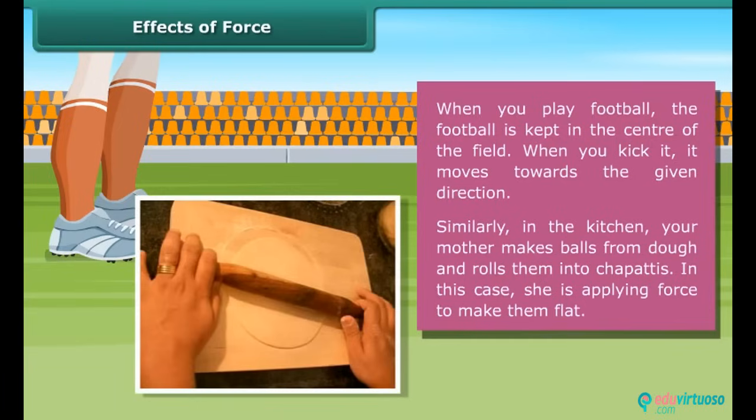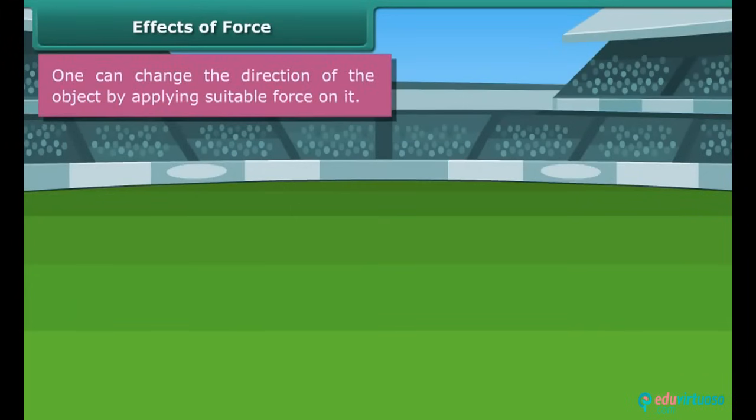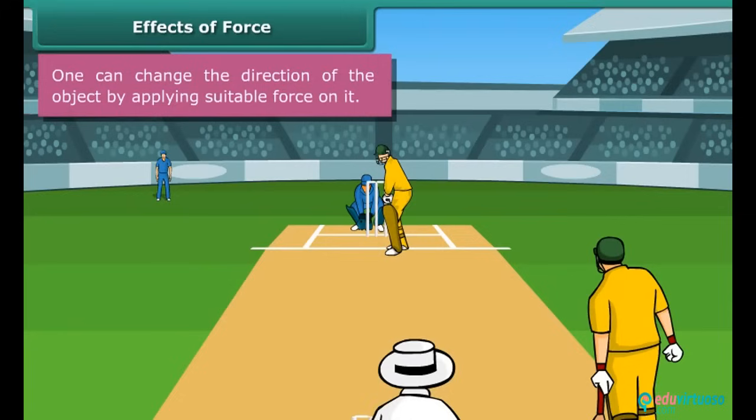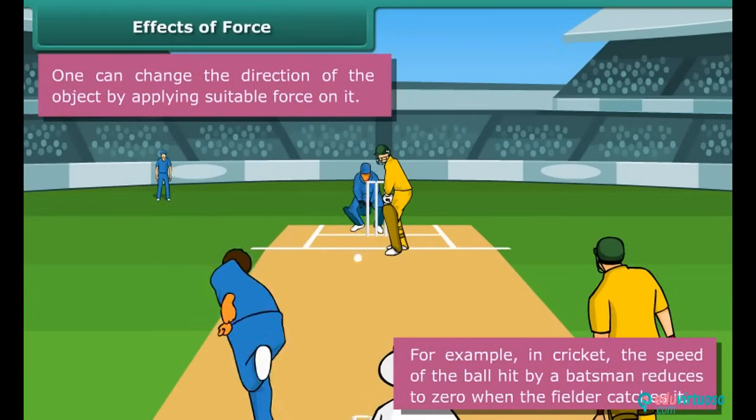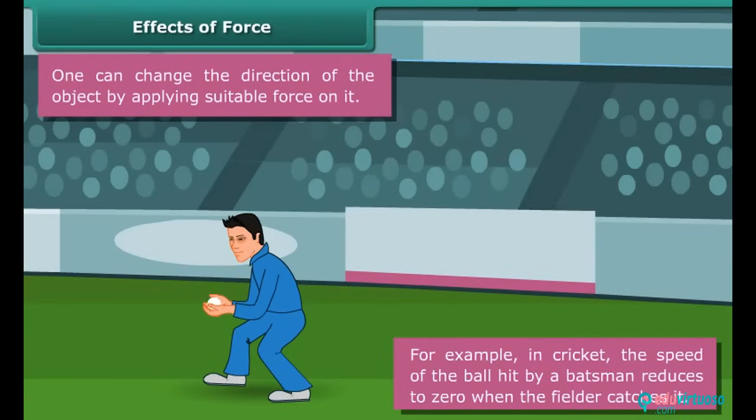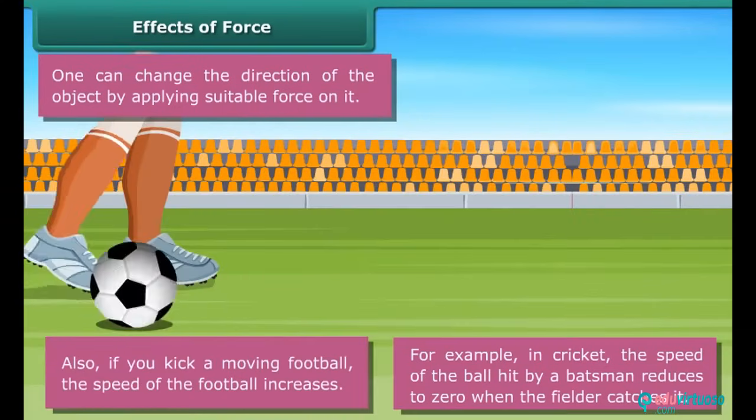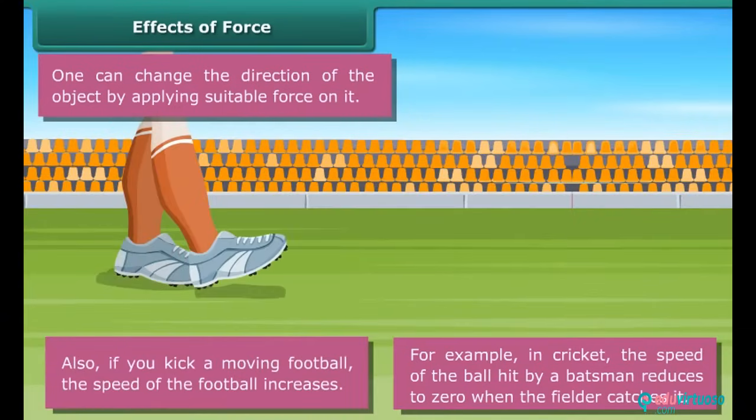In this case, she is applying force to make them flat. Effects of force: one can change the direction of the object by applying suitable force on it. For example, in cricket, the speed of the ball hit by a batsman reduces to zero when the fielder catches it. Also, if you kick a moving football, the speed of the football increases.